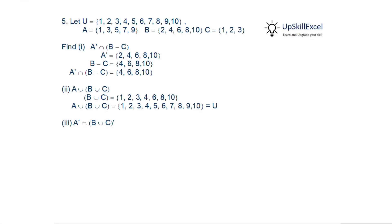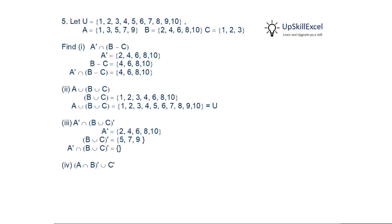Third question: find A complement intersection (B union C) complement. We calculate A complement, then find B union C complement — first computing B union C from the previous question and taking its complement, which gives {5,7,9}. Taking the intersection of A complement and {5,7,9}, we find nothing in common, so the result is the null set.